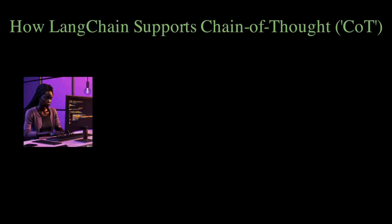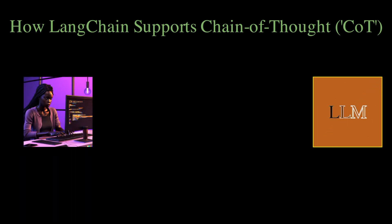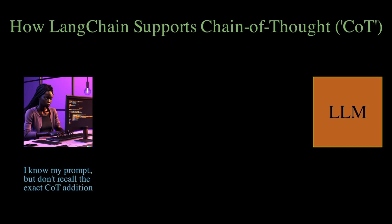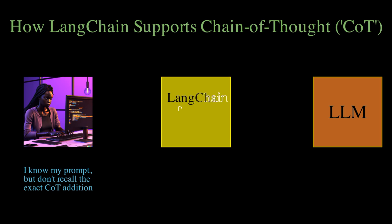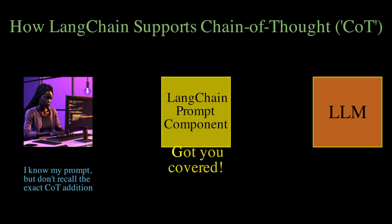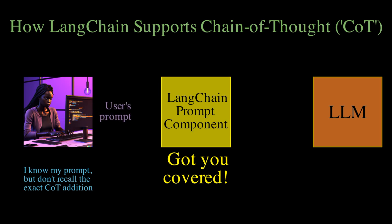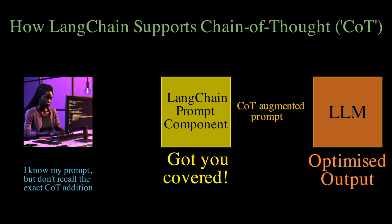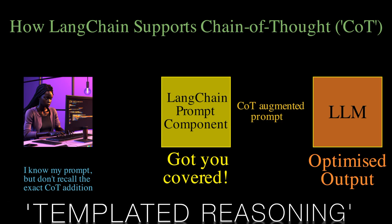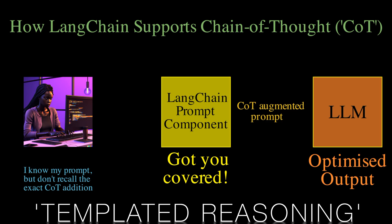LangChain provides extensive support for chain of thought prompting by automating the generation and application of such prompts. It removes the burden for users or systems further up the chain to supply the additional text for COT prompting. This is made possible through its unique prompt components and chain processing that takes input from multiple sources to formulate the optimum COT prompt for a given situation. Moreover, LangChain facilitates templated reasoning, providing a systematic structure for generating COT responses to diverse inquiries.